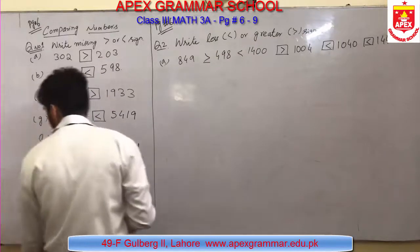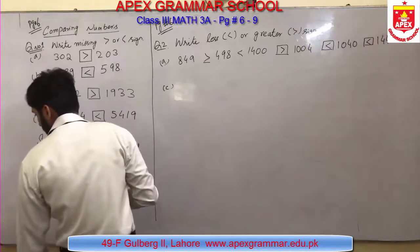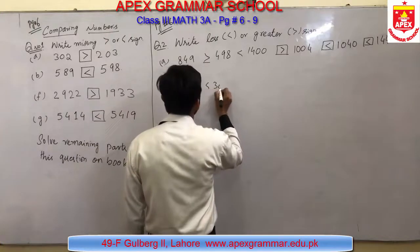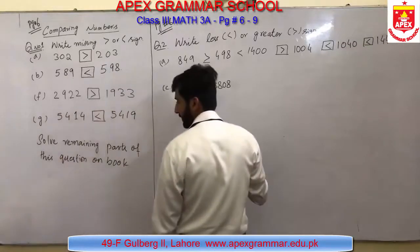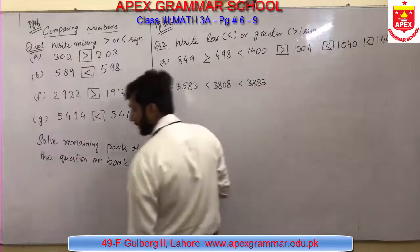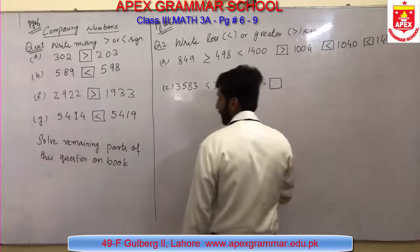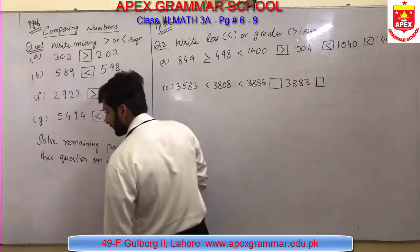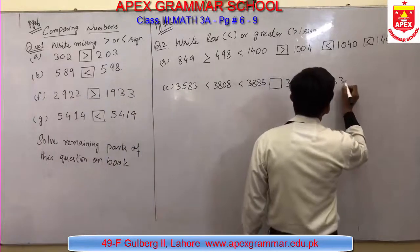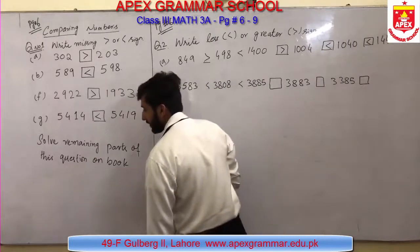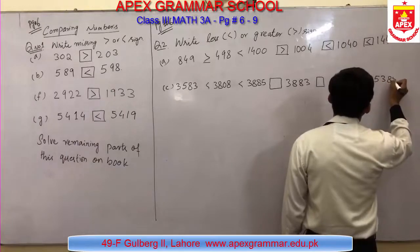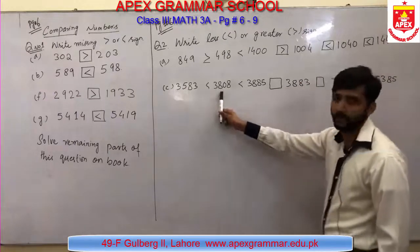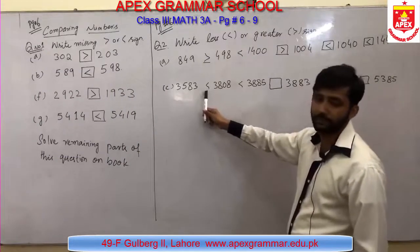Now I am going to solve question 2 part C. The numbers are 3583, empty box, 3808, empty box, 3885. First number is 3583 and second is 3808. Comparing: 35 hundred is smaller than 38 hundred, so the sign here is less than.